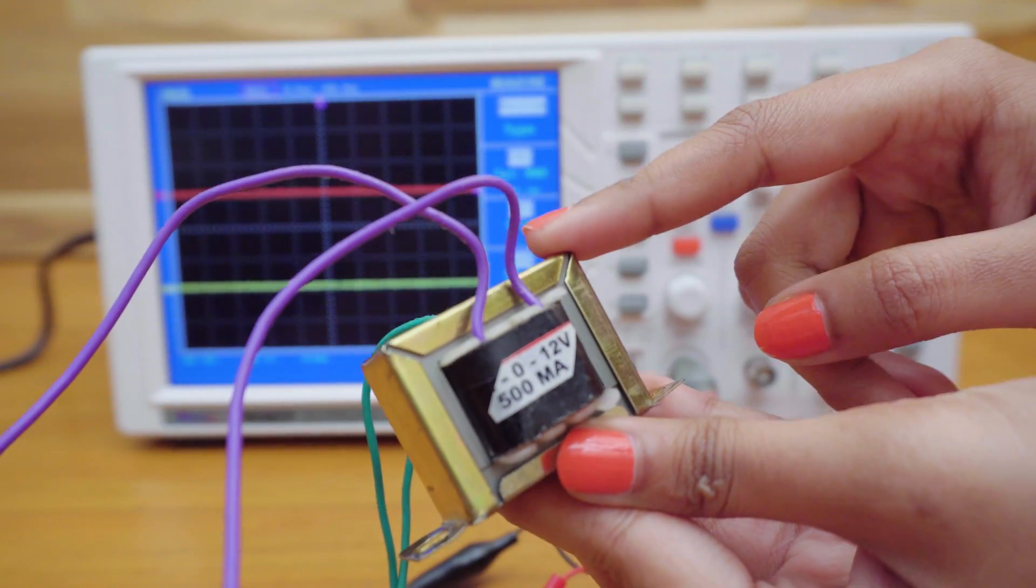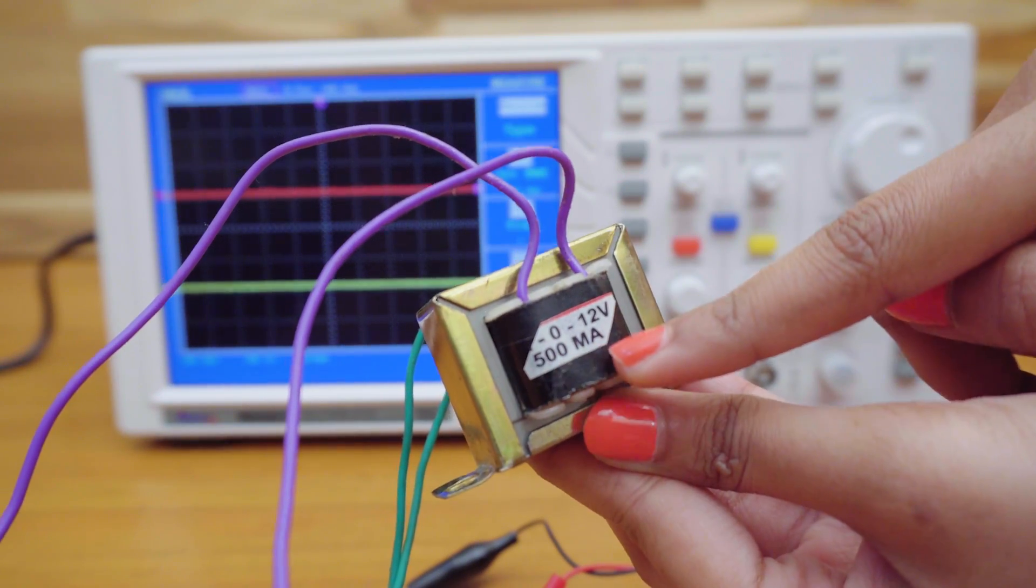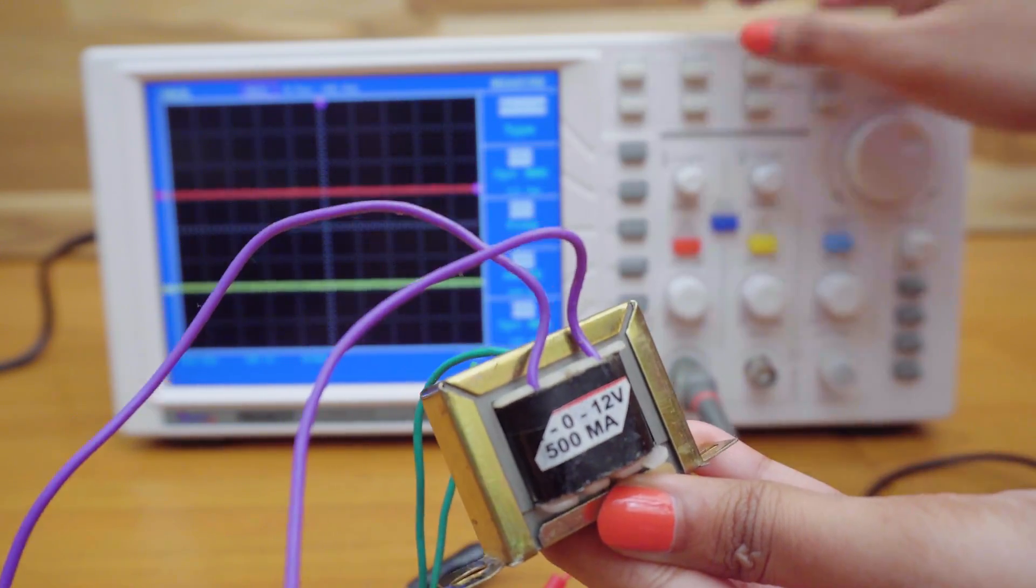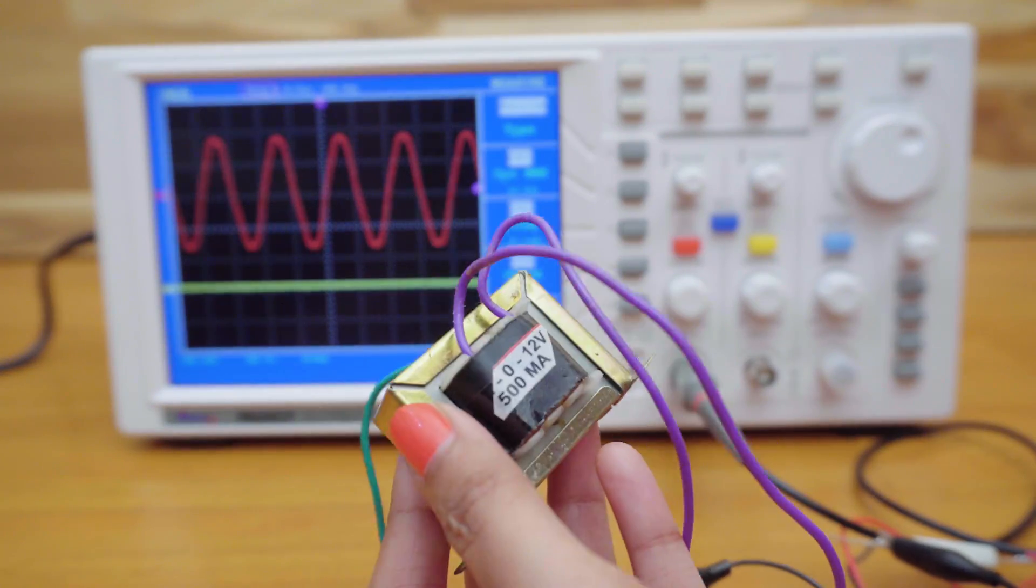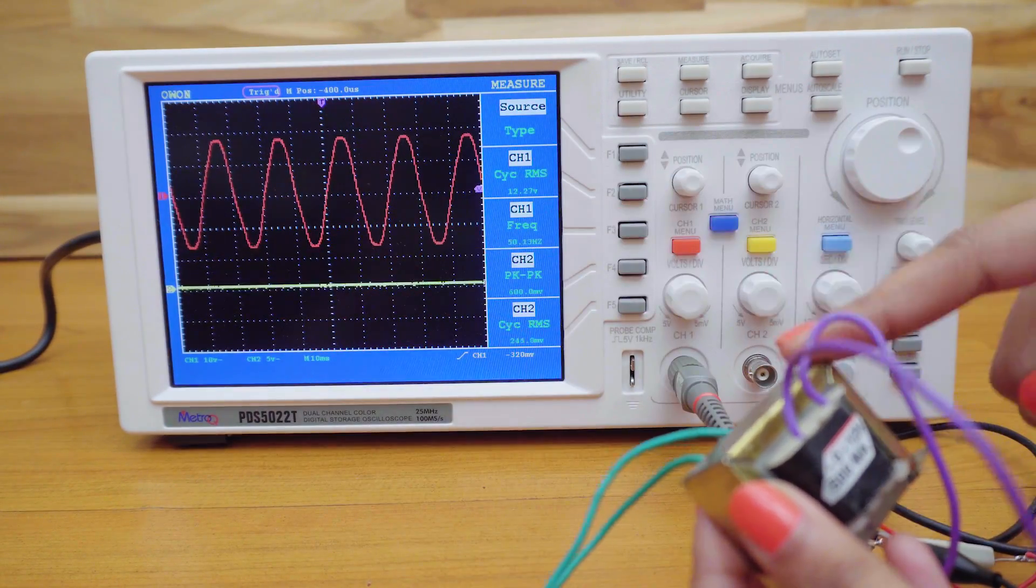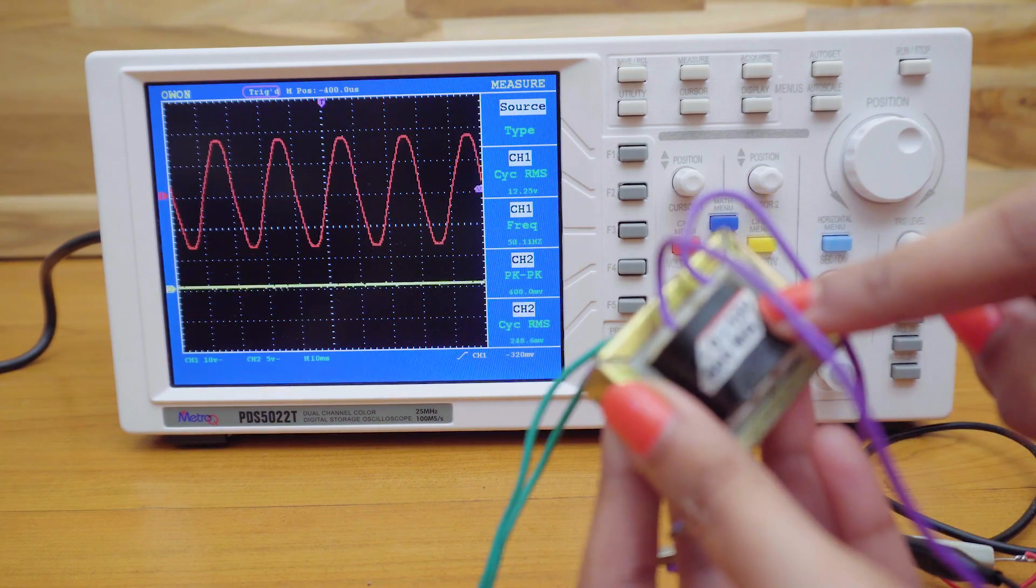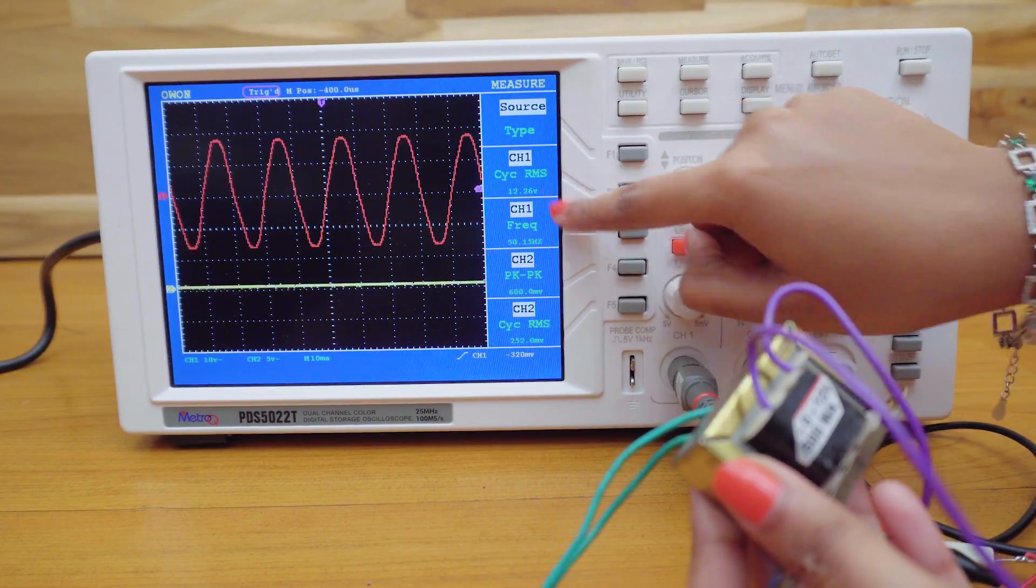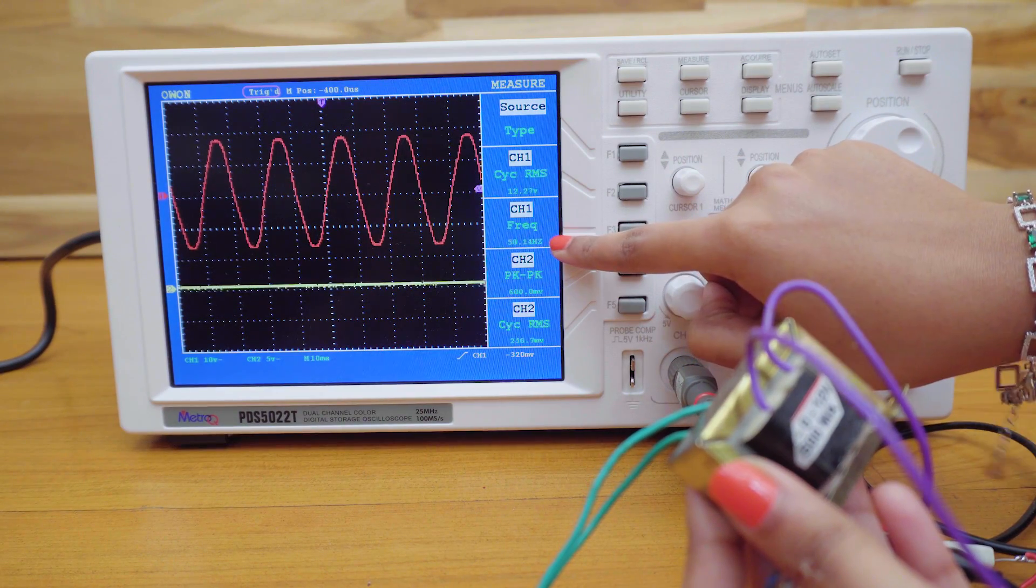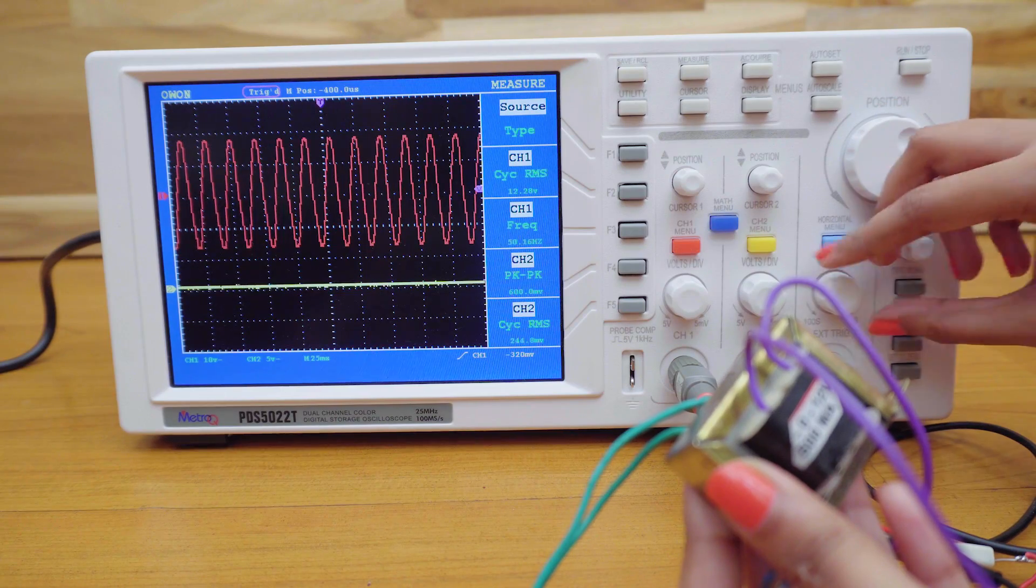Let's check the AC voltage of this transformer. I'll be using a 12V transformer. Let me connect it to the oscilloscope. You can see the sine wave on the screen and it's showing 12V AC. As the mains frequency is 50Hz, it's displayed here on the screen.